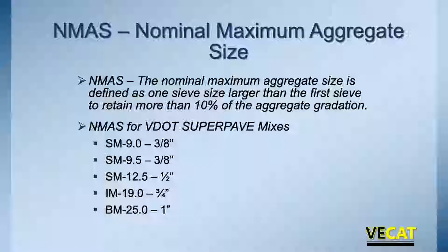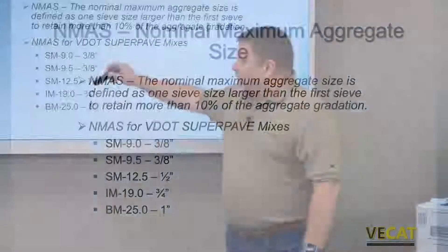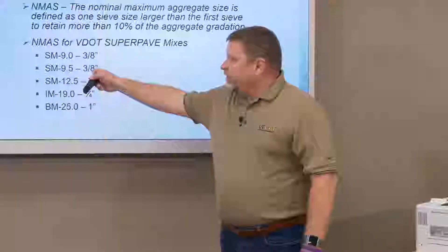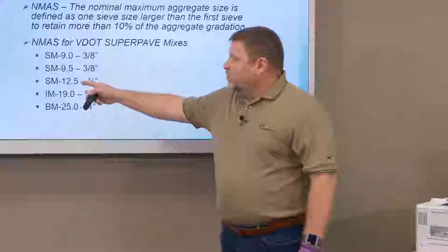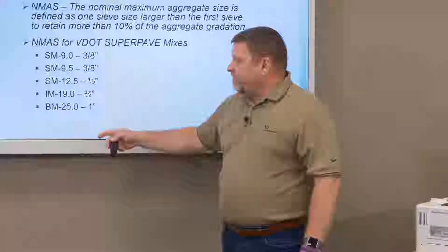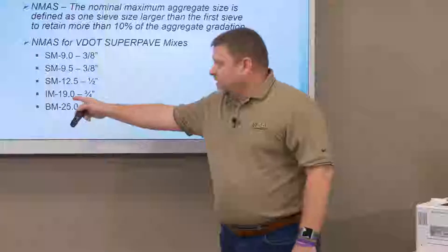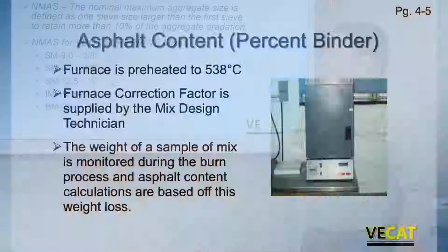Nominal maximum aggregate size is one sieve size larger than the first sieve to retain more than 10% of the aggregate. For 9.5 or 9.0 mixes, that's three-eighths-inch material; 12.5 millimeter is half-inch; 19 millimeters is three-quarter inch, and so on.